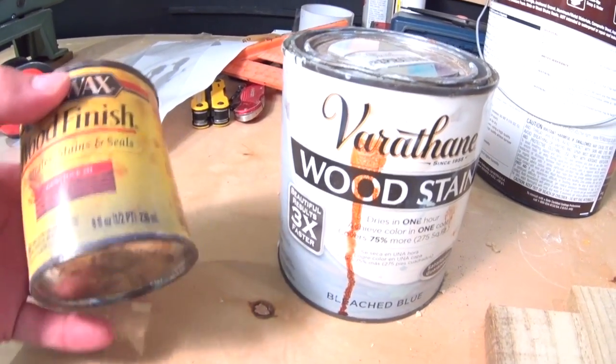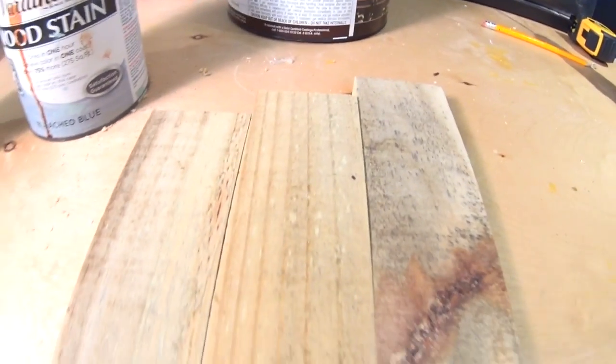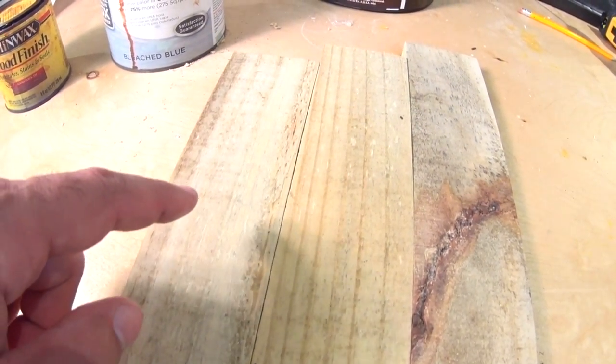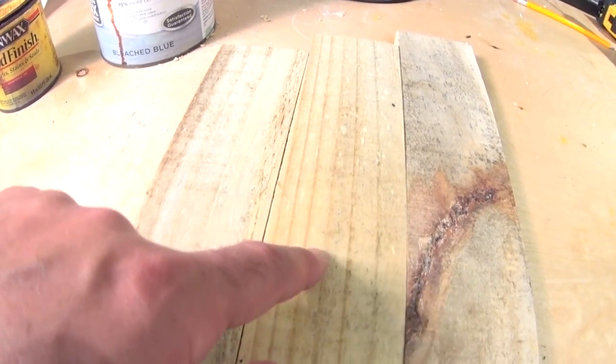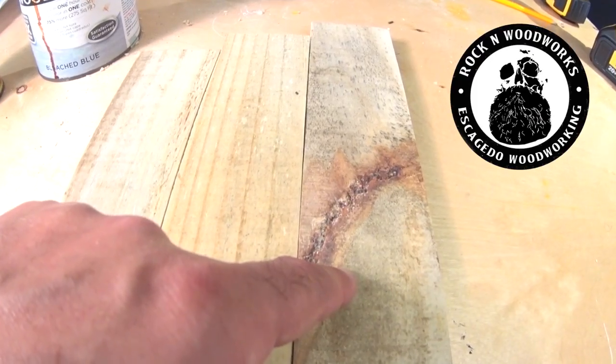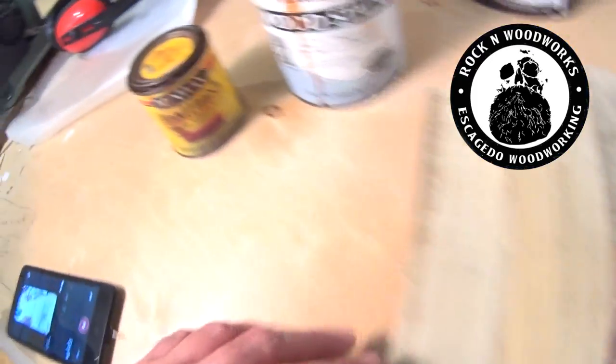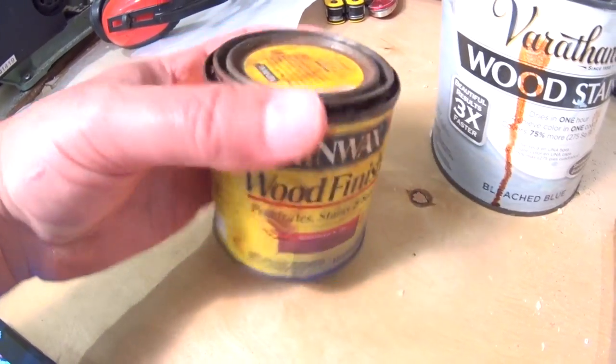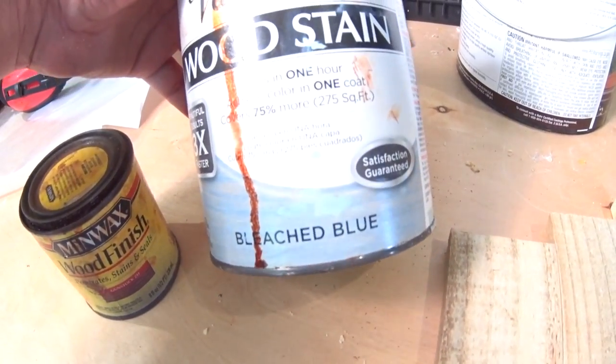I need to stain them so I'm going to have different colors. I might do this one blue, leave this one its own color and darken this one. So, I've got gunstock and this bleached blue.